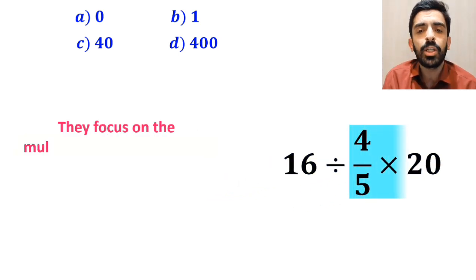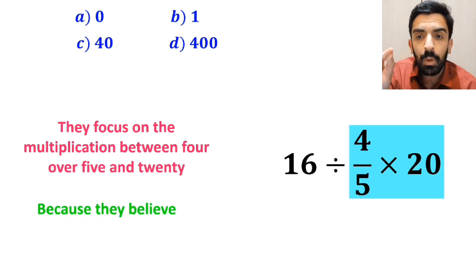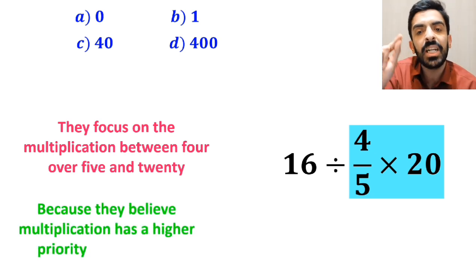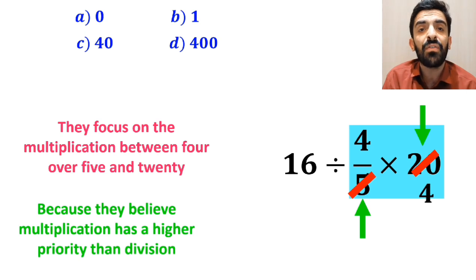In the next step they focus on the multiplication between 4 over 5 and 20, because they believe multiplication has a higher priority than division. As you can see in the image, they simply cancel out 20 with the 5 in the denominator.